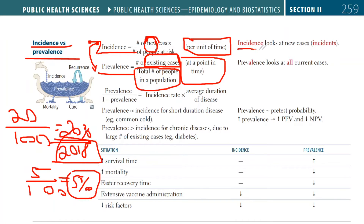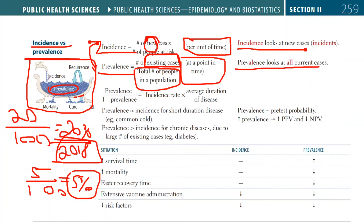Once again, incidence looks at new cases and prevalence looks at all the current cases. This diagram really highlights this — prevalence is everything within the bathtub, all the current cases, and incidence is all the new cases trickling in. Sometimes cases can be cured but then recur, so they get added again to this pool, and some die. If you put the number of people who died over the prevalence — which is basically the number of cases — you get the case fatality rate, CFR, which we discussed in the quantifying risk video.